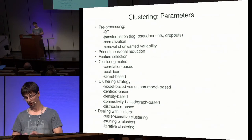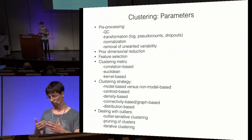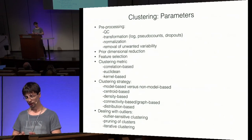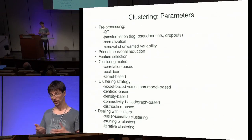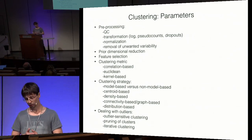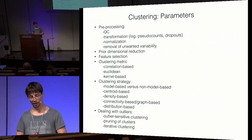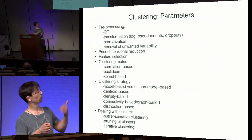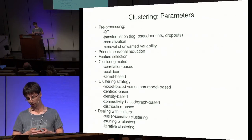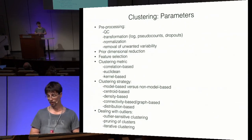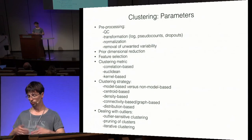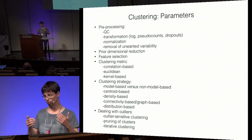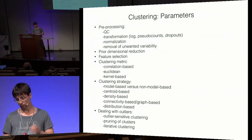For the clustering strategy itself, there are two main categories: model-based and non-model-based. Non-model-based methods include centroid-based approaches like k-means and k-medoids, density-based methods, connectivity or graph-based clustering, and distribution-based clustering. We also need to decide how to handle outliers — whether to use outlier-sensitive clustering, prune clusters, do iterative clustering, or discard outliers as artifacts.